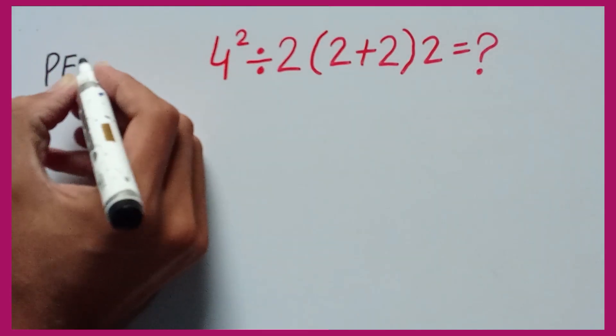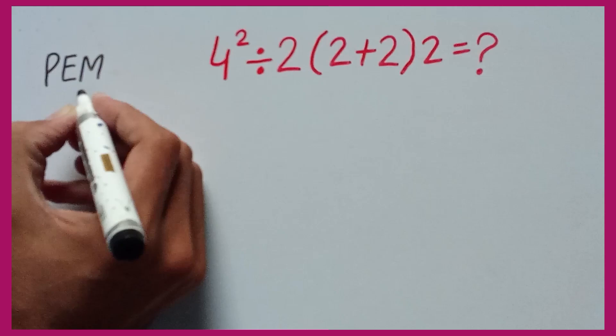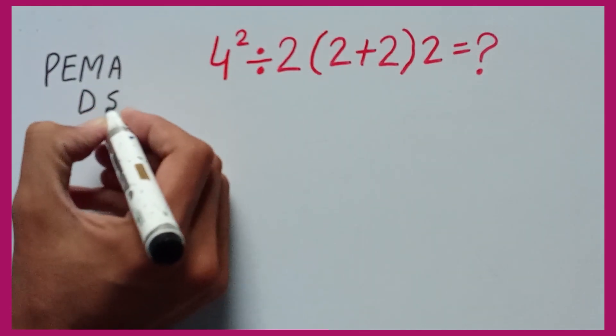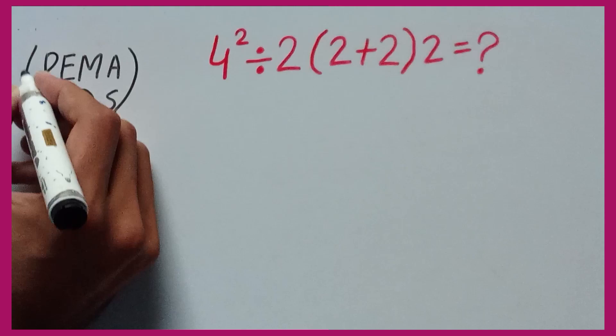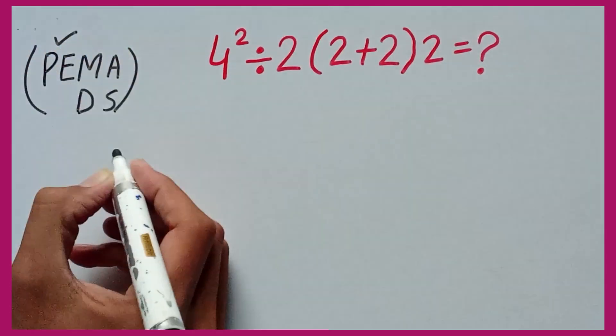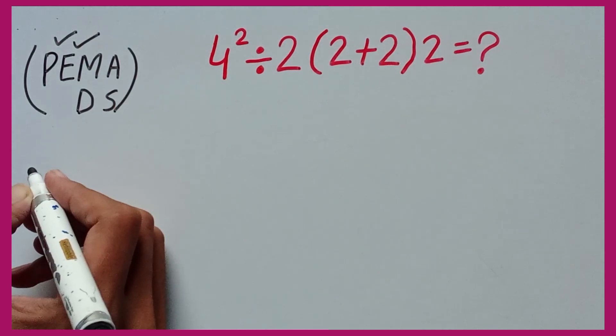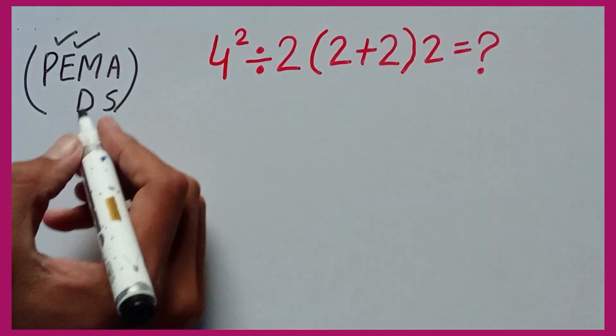E stands for exponent, M and D stand for multiplication and division, A and S stand for addition and subtraction. Guys, in PEMDAS, parentheses have higher priority than other operations and as well exponent have higher priority than other operations.